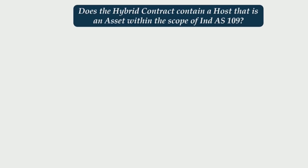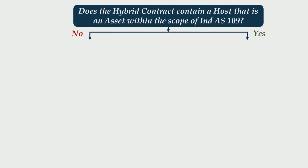Let us move ahead and try to understand these conditions. The first thing you need to understand is: does the hybrid contract contain a host that is an asset within the scope of Ind AS 109? That means, the first fundamental question you should ask is, once you identify a hybrid contract which contains a host contract and an embedded derivative, you ask yourself a question about the nature of the host contract. Is it a financial asset? In other words, is it an asset within the scope of Ind AS 109? When you ask this question, there can be two possible answers: either yes or no.